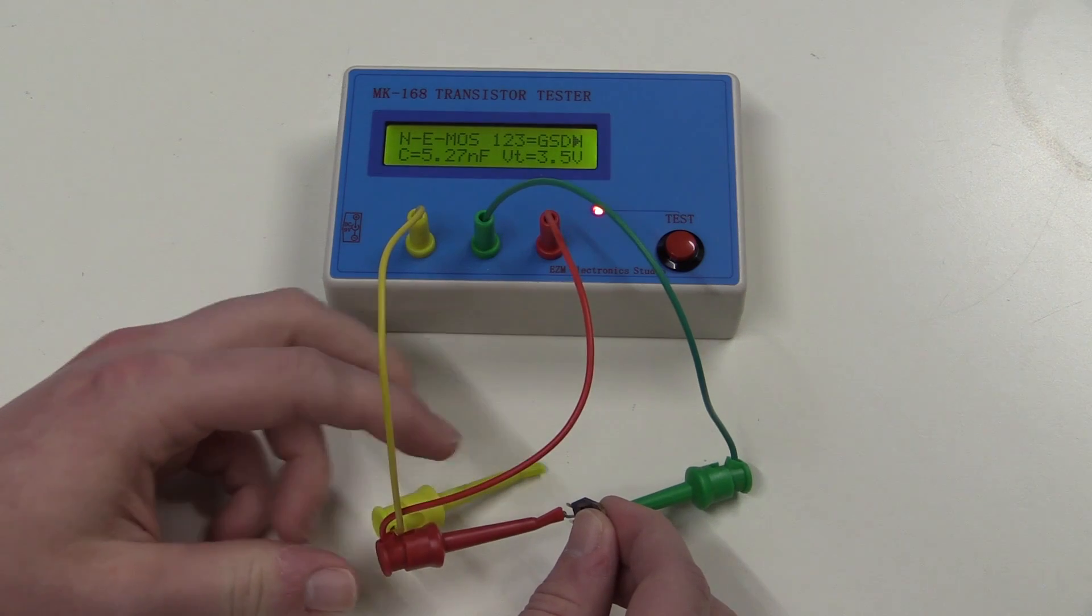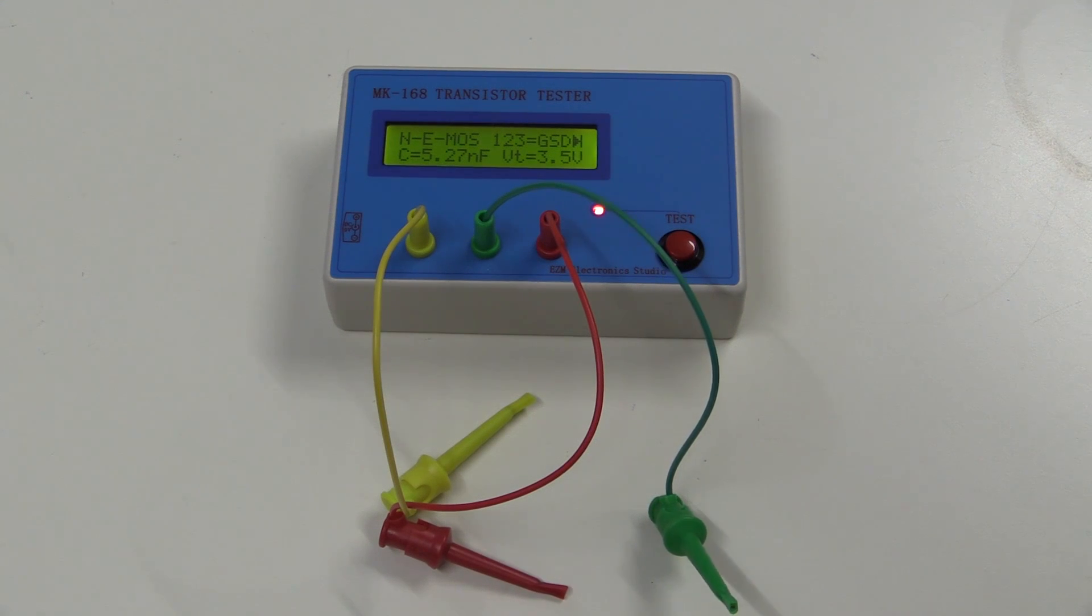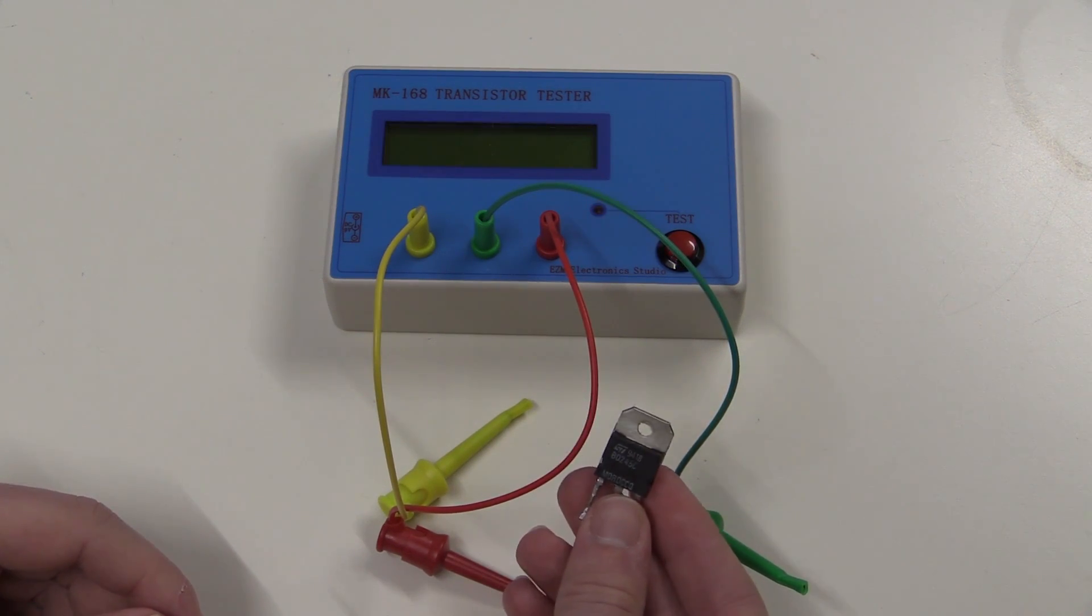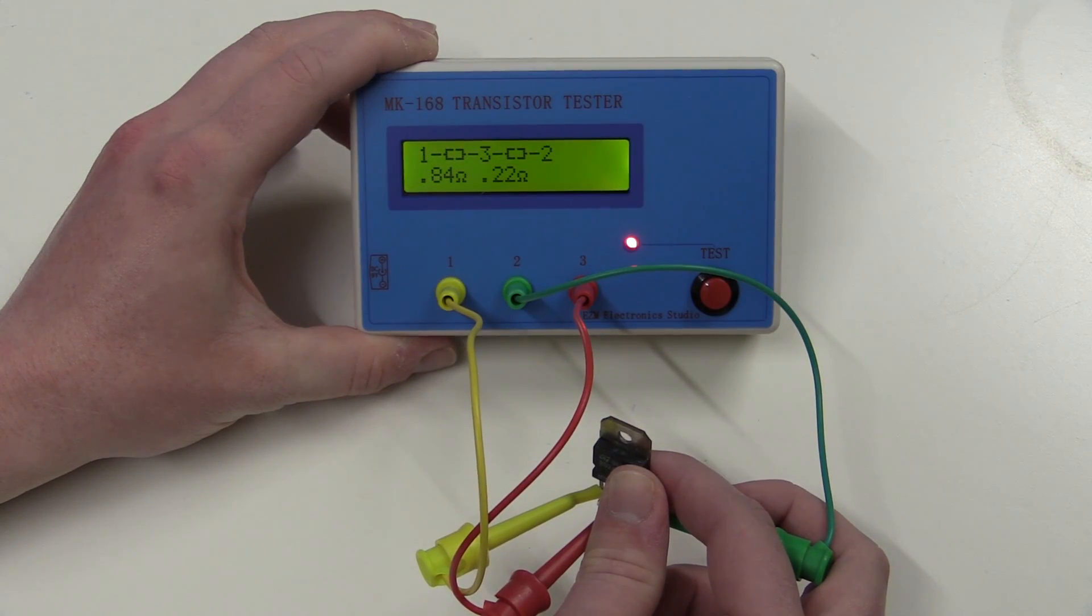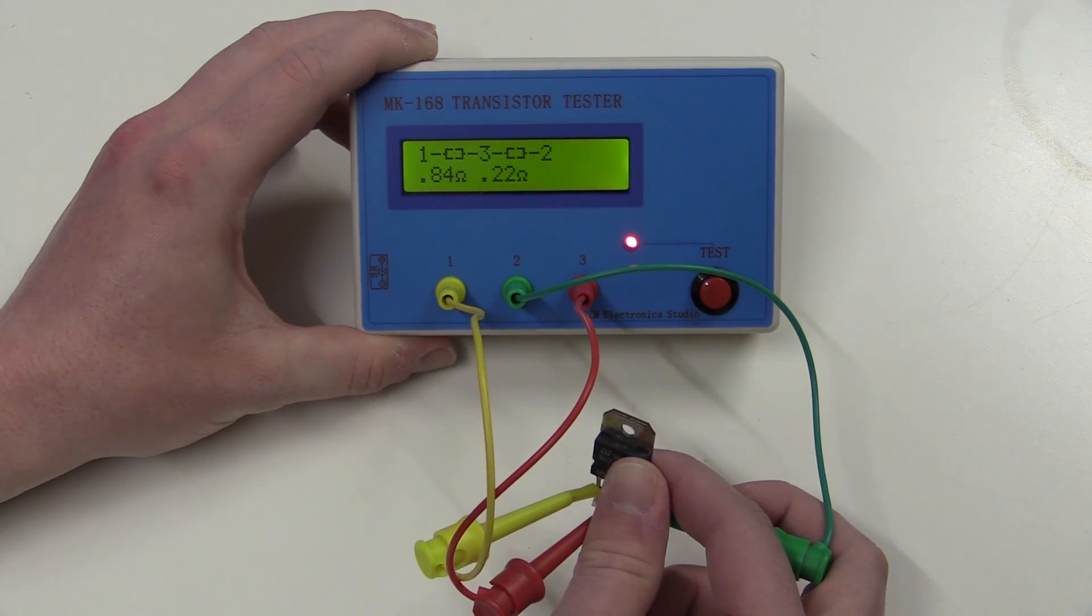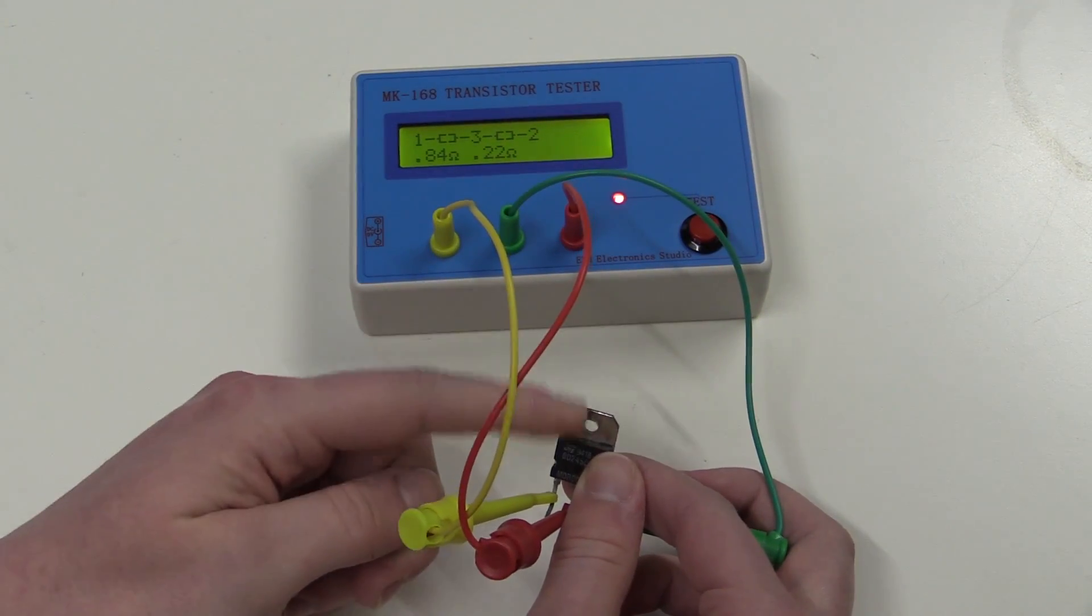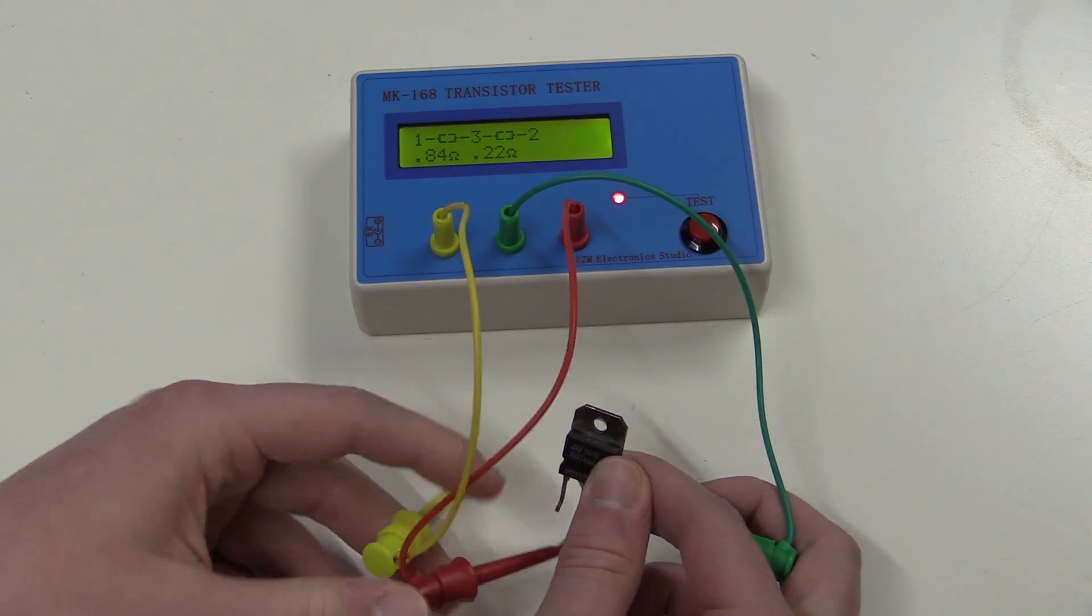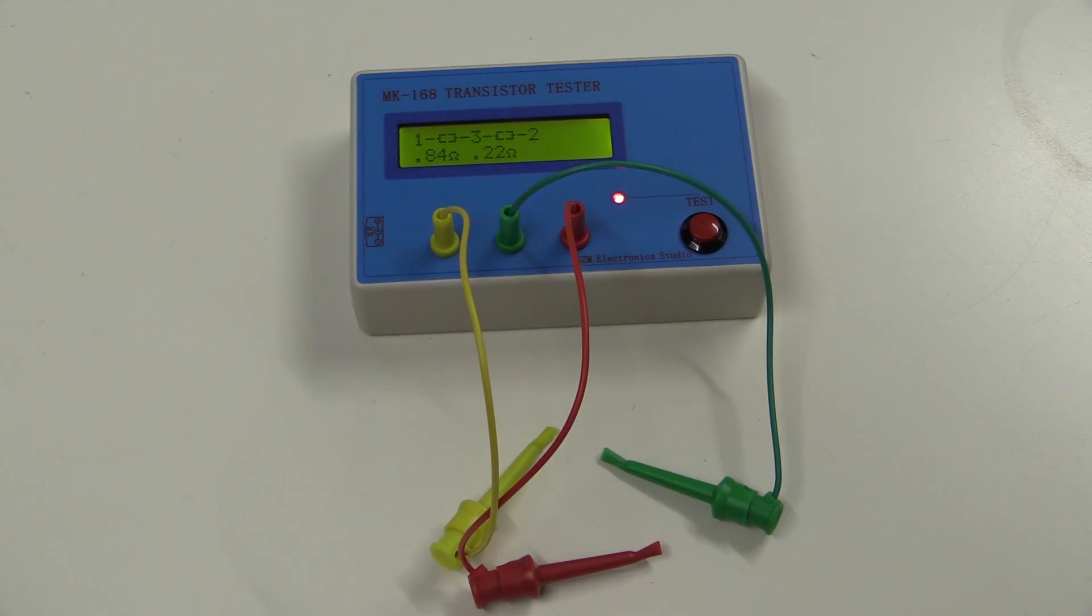Now, this can also test triacs, but unfortunately, I don't have any of those. So let's continue with another thing. This is a power transistor. Let's see what it says about this one. And we're getting this. This is really weird. It's showing two resistors instead of a transistor. So there is something wrong with this thing. I guess this is going to go into the garbage, because it's not behaving like a transistor should behave. However, this basically already leads us to the next thing.